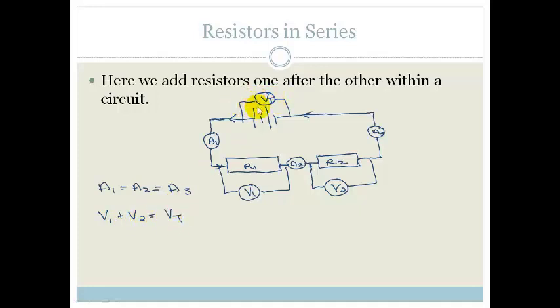So therefore we find that V1 plus V2 equals V total. In other words this V total is measuring the amount of work it requires to get the electrons through both resistors. The total amount.